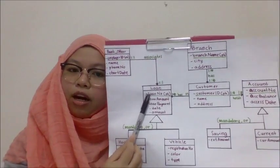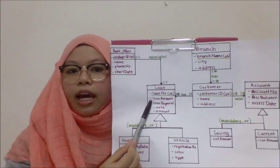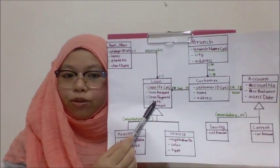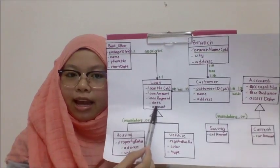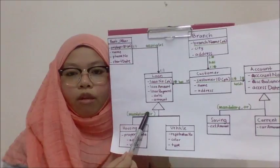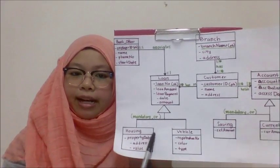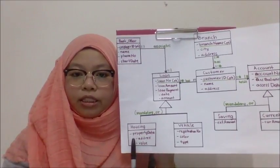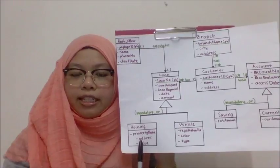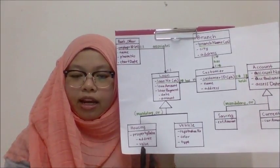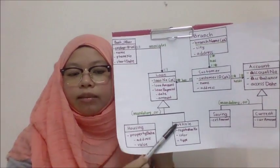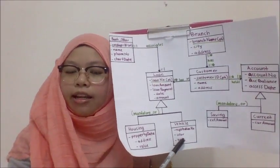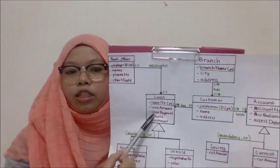The next entity is the loan entity. The attributes are loan number, which is the primary key, loan amount, and loan payment. Under the payment attribute, there is also date and amount. Under the loan entity, the subclasses are housing loan and vehicle loan. For housing loan, the attribute is property data, which includes address and value of the property. For vehicle loan, the attributes are registration number, color, and type of the vehicle.